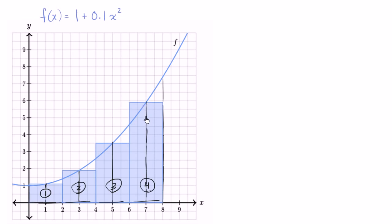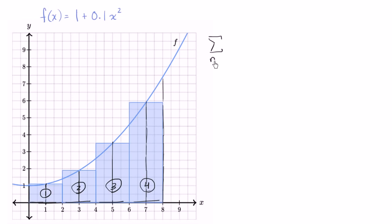So given the way that this has been constructed, and we want to take the sum of the areas of these rectangles as an approximation of the area under this curve, how would we write that as sigma notation? I'll get us started. The sum of these rectangles — we could say it's the sum with n equals one to four, because we have four rectangles.